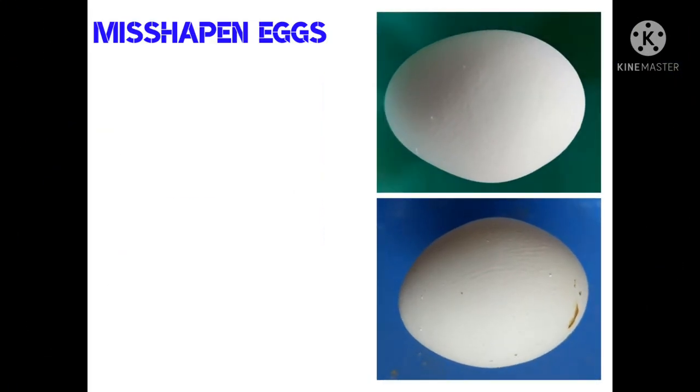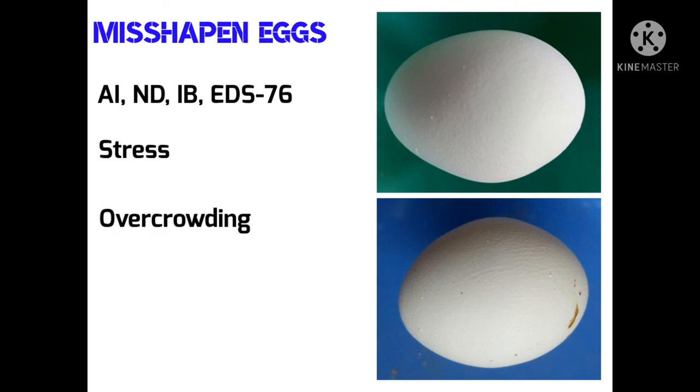These are misshapen eggs and you can find these eggs are too small or maybe too large. Sometimes they are round instead of oval or they may differ from normal shapes. The presence of immature shell gland and some diseases like avian influenza, Newcastle disease, infectious bronchitis, or egg drop syndrome 76, or stress and overcrowding cause the formation of misshapen eggs.